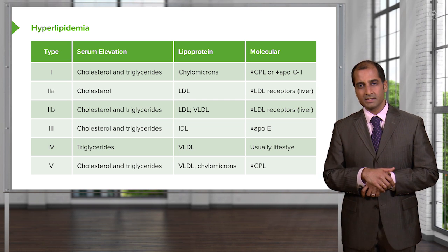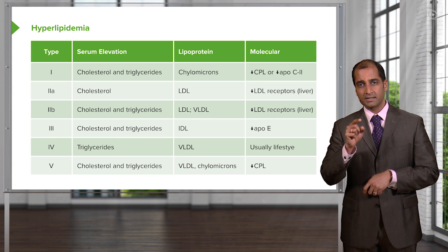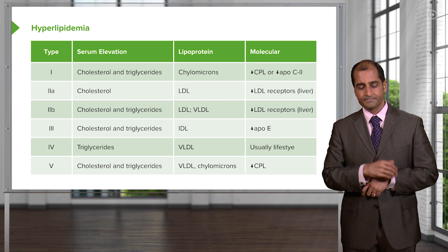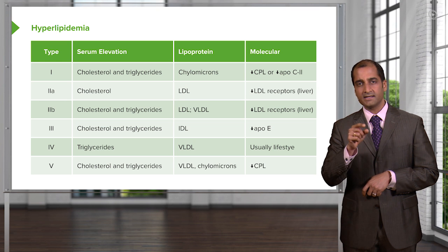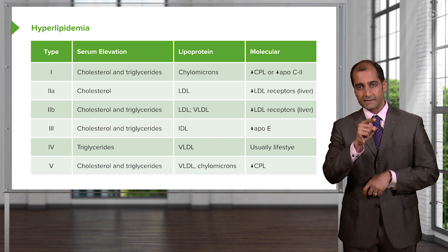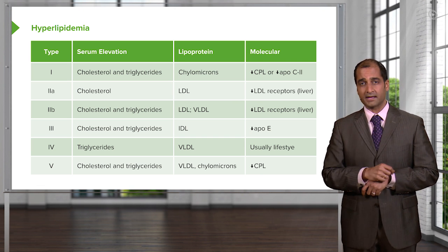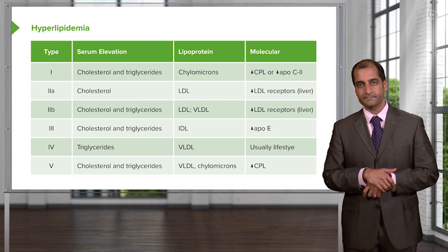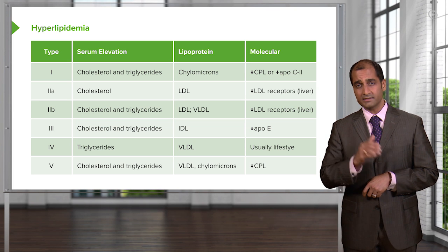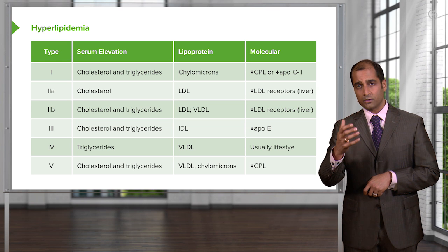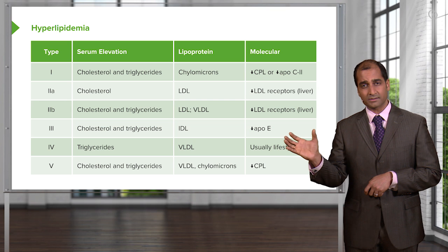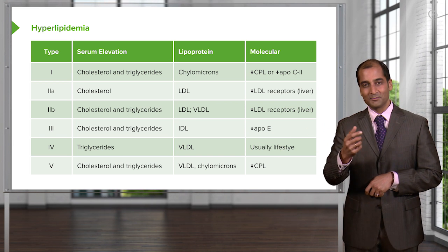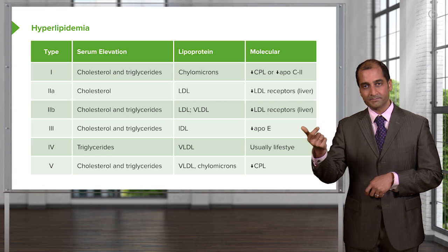Now let's talk about Type 2. In Type 2, lipid is being transported from the liver to the tissue. The liver produces VLDL — and VLDL will never be produced by an enterocyte, only from the liver. That VLDL contains triglycerides and has to be converted into LDL so that it contains cholesterol to go to the tissue. The intermediate between VLDL and LDL is called IDL.